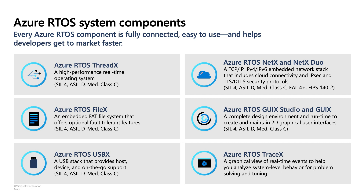GUIX Studio is a Windows application that is free to download from the Windows Store — like a lightweight Photoshop. You can use it to quickly draw your 2D graphics and export generated code to accelerate the development process. USBX is dedicated for embedded applications that require connecting to USB devices. It's a high-performance stack supporting both host and slave models.